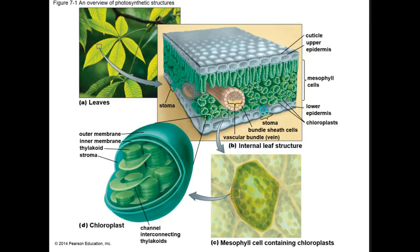This slide goes into more detail on the photosynthetic structures of plants. The outer surface of both epidermal layers is covered by the cuticle — a transparent, waxy, waterproof coating that reduces the evaporation of water from the leaf. Inside the leaf are layers of cells called the mesophyll cells, where the chloroplasts are located and where photosynthesis occurs. Bundle sheath cells surround the vascular bundles, which lack chloroplasts in most plants.